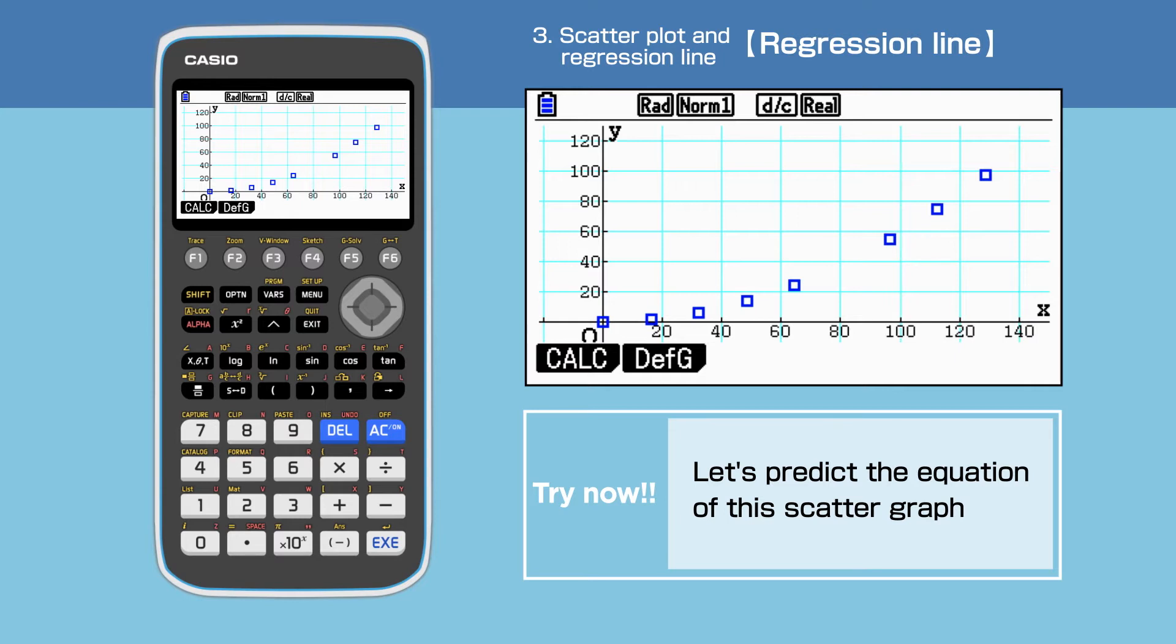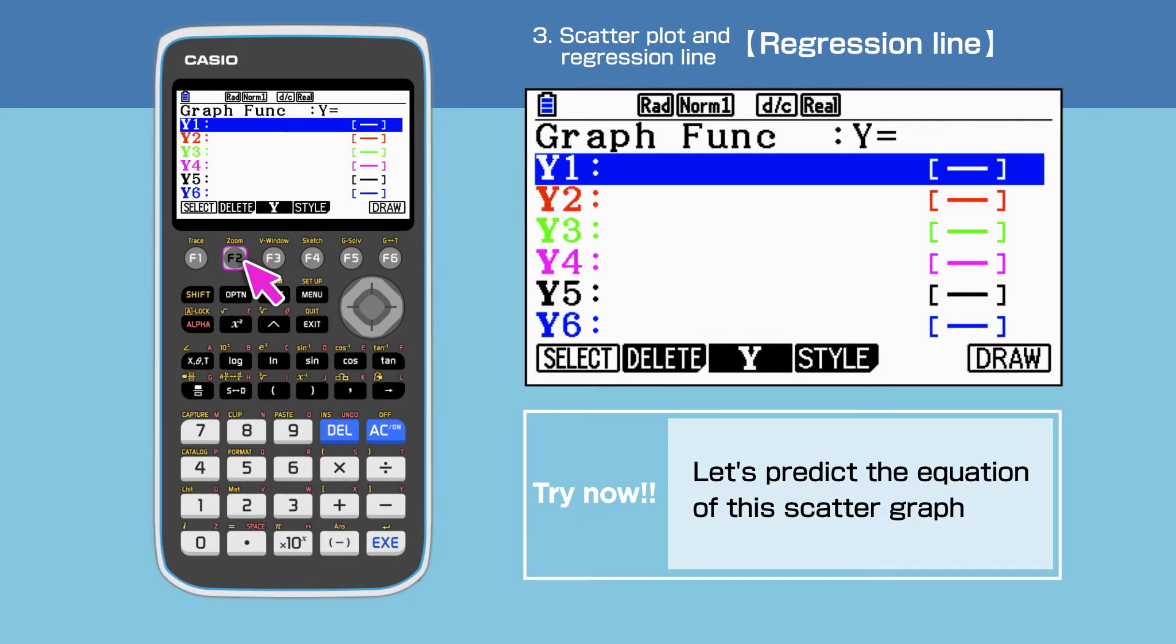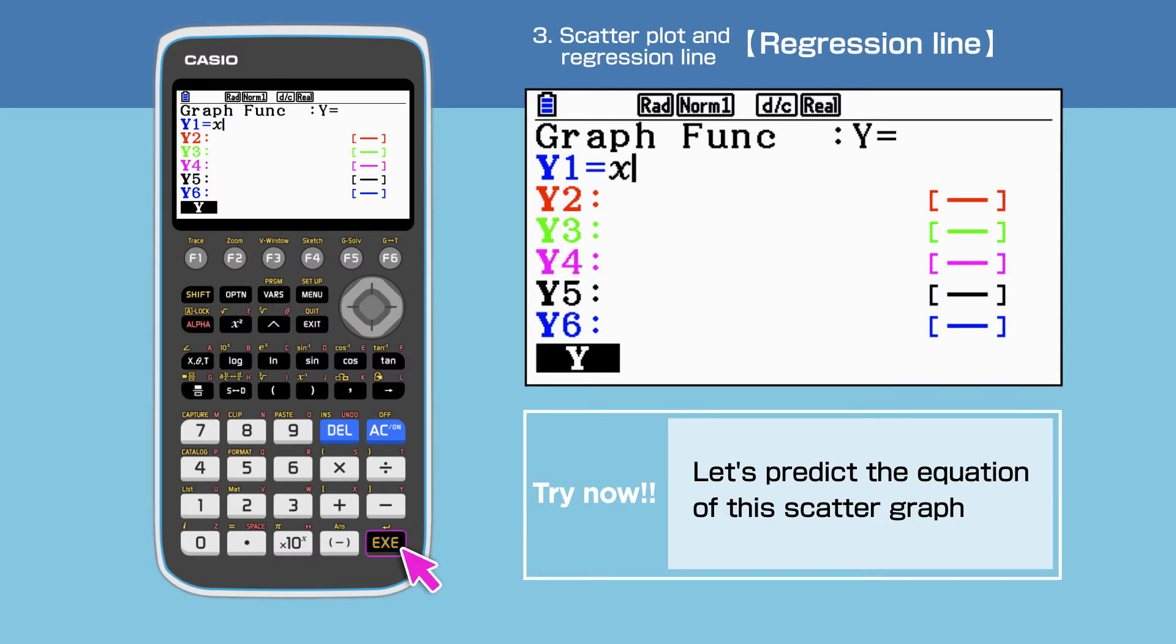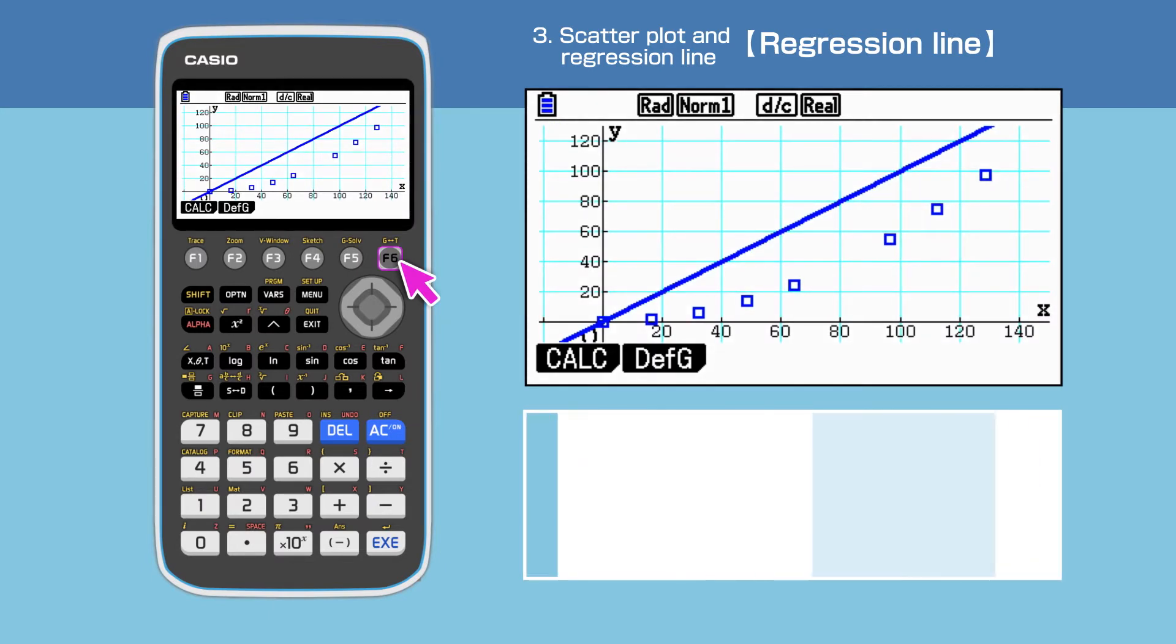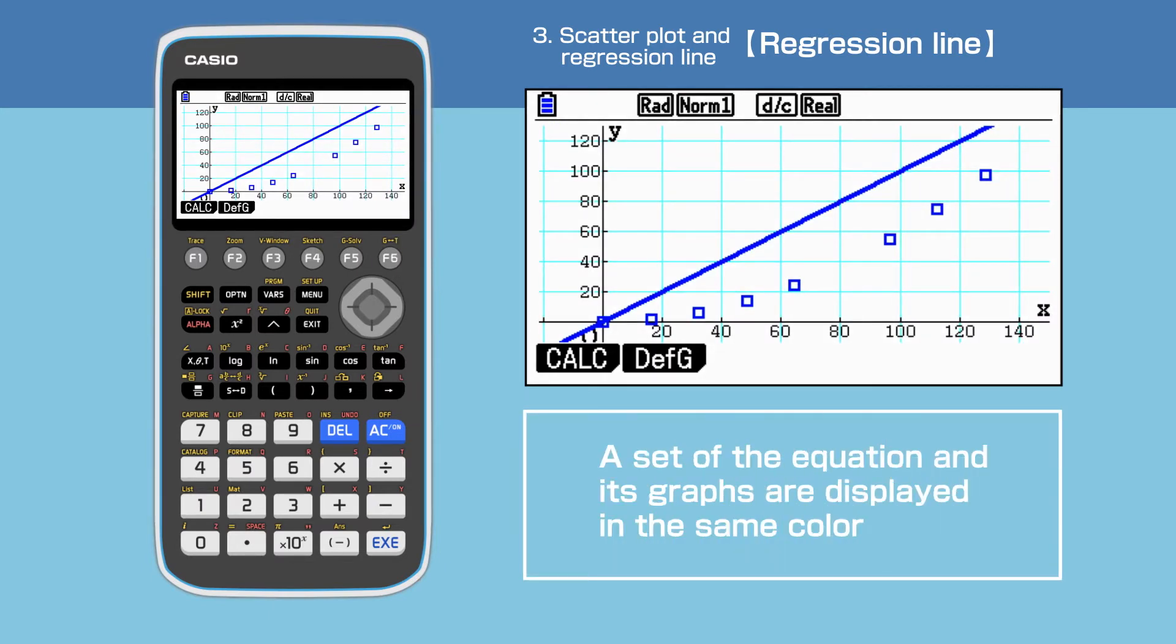For the first attempt, we try Y equals X. The equation can be entered by pressing F2. Enter Y1 equals X, then press F6 to draw. The blue line graph has the equation Y equals X.